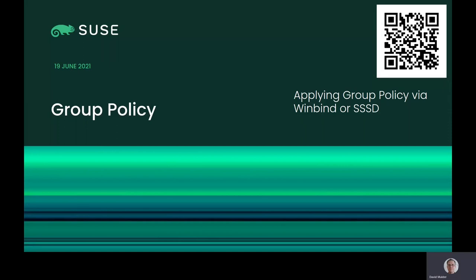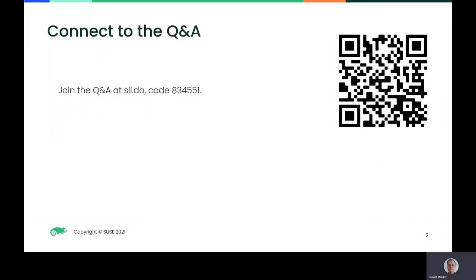This presentation summarizes the group policy client work being done for WinBind and SSSD in Samba. A questions and answers segment for this talk is being handled on Slido, which you can access via code 834-551 or via the QR code on the screen. The Slido for this talk will remain open for a week after this presentation at the Open SUSE conference.